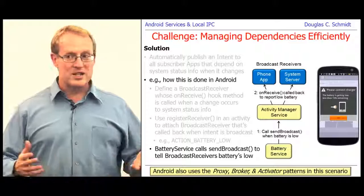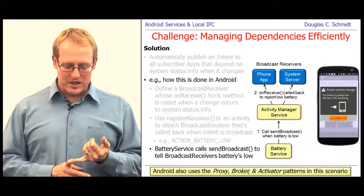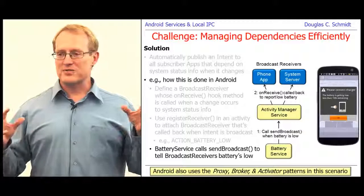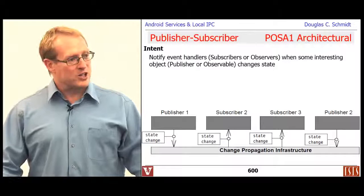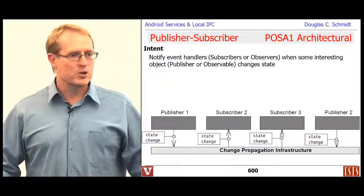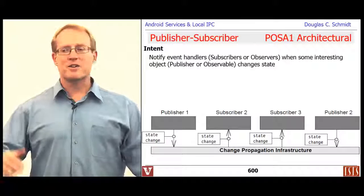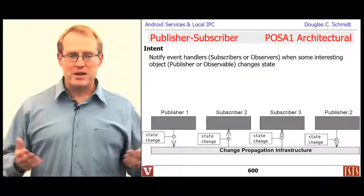Just as a note, this example has a variety of patterns involved: activators, brokers, proxies, and others. The particular pattern doing this magic callback approach when something interesting happens is called the publisher-subscriber pattern — a very popular pattern that goes by different names. Publish-subscribe refers to the actions, while publisher-subscriber refers to the nouns. Most patterns are described in terms of nouns — like adapter or bridge — so here we call it the publisher-subscriber pattern.